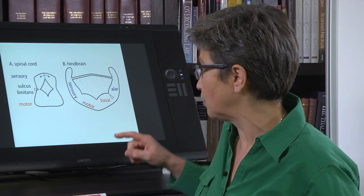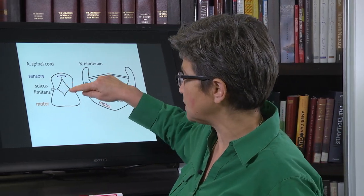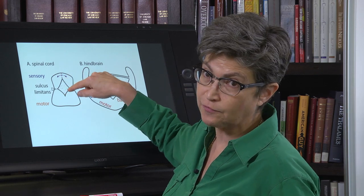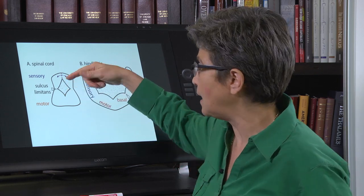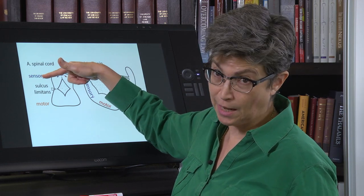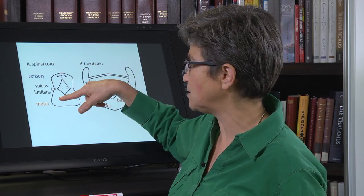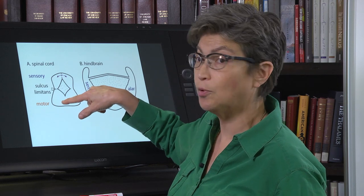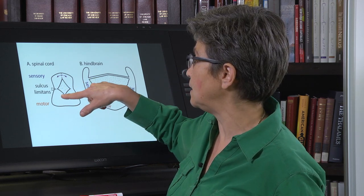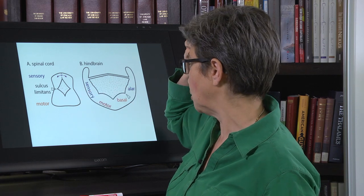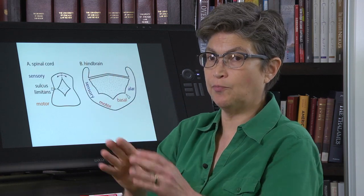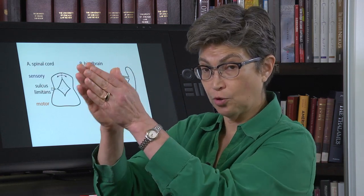To understand this, I want to go back to the development of the spinal cord. Remember that there's a sulcus limitans in the embryonic lumen that is going to develop into the central canal. It separates the alar plate — which becomes sensory — from the basal plate — which becomes motor, both skeletal motor and autonomic motor in the ventral part.